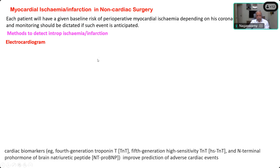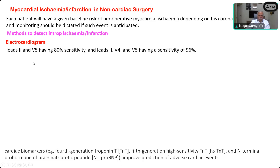ECG is the most important method of diagnosing ischemia or infarction intraoperatively. It can identify right coronary artery or left coronary artery involvement through characteristic changes. Normally we use only a 3-lead ECG with standard lead II as a routine monitoring device. But when myocardial ischemia or infarction is anticipated, leads II and V5 give 80% sensitivity, and leads II, V4, and V5 together give 96% sensitivity. Therefore, a 5-lead ECG should be used.